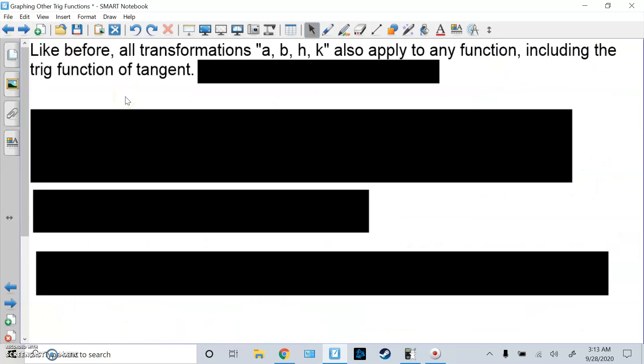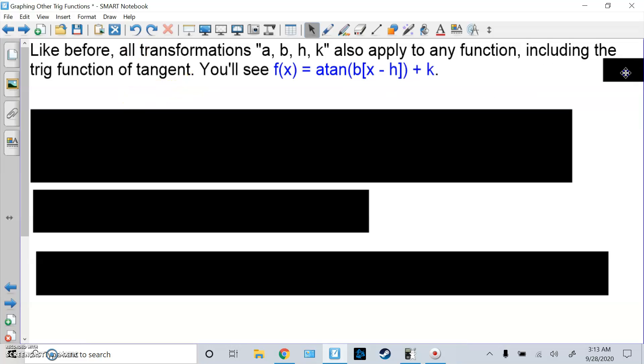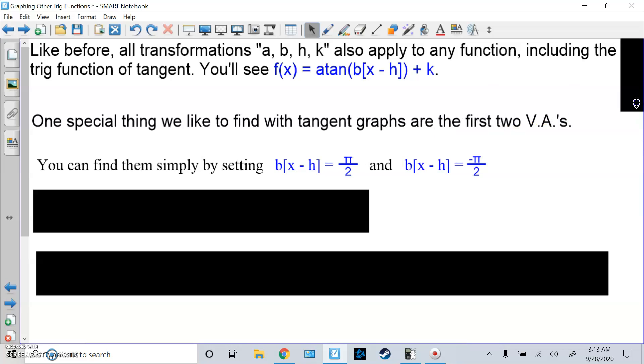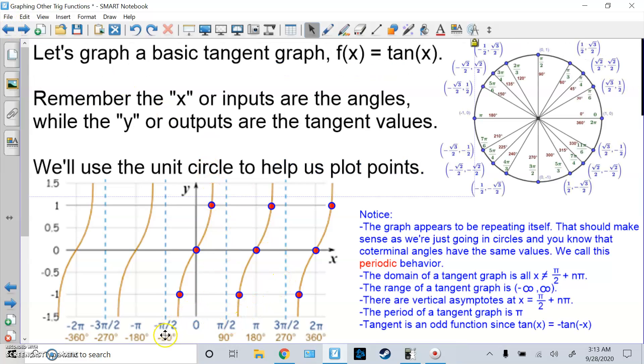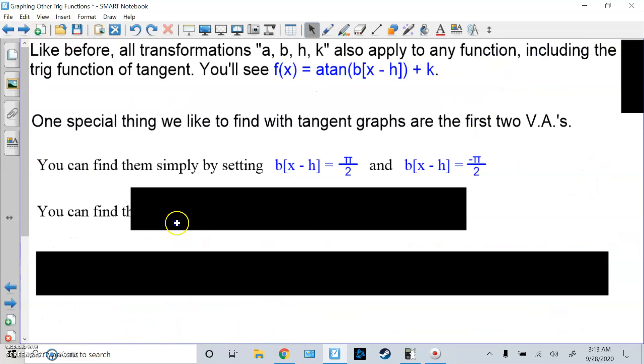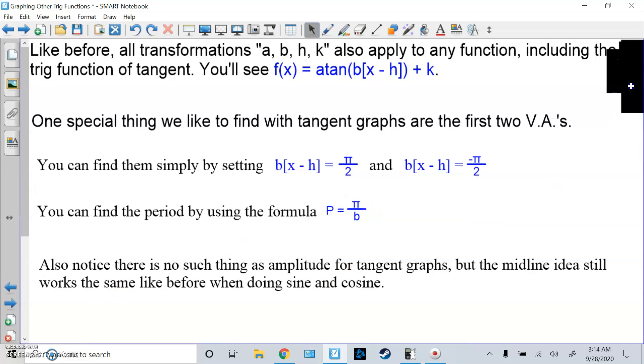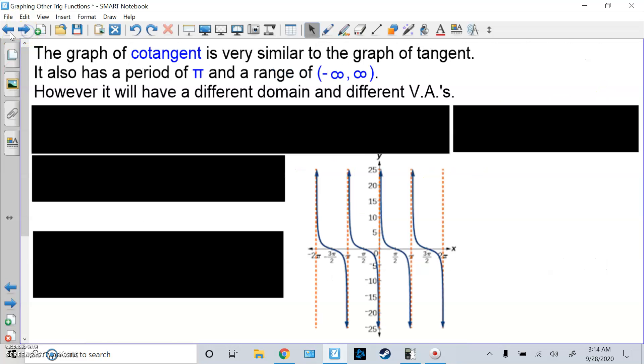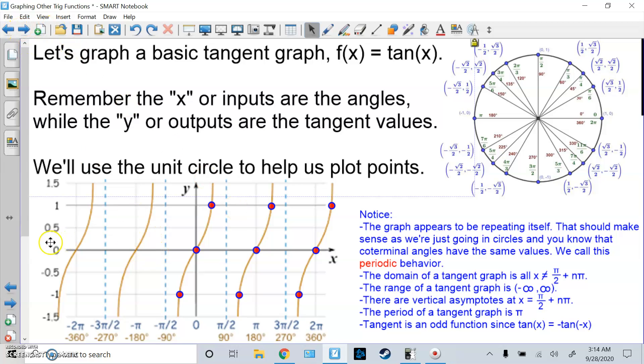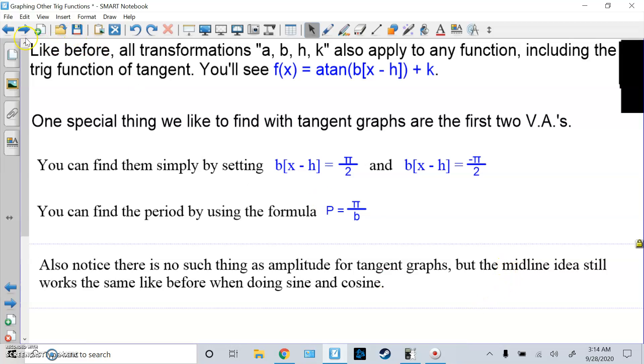So like before, all transformations a, b, h, k apply to any function, including the trig function of tangent. You'll see this equation: f(x) = a*tan(b(x - h)) + k. One special thing we like to find about tangent are those vertical asymptotes, the first two. You can find them by just solving this equation: b(x - h) = pi/2 and negative pi/2. That came from this pi over 2 asymptote here and this negative pi over 2 asymptote here, and you can do any two asymptotes you want. You can also find the period using our period formula: p equals the true period of our function over b. Now sine and cosine had 2 pi as the true period over b, but for tangent, its true period is pi, so all that changes is the top part. And also there's no such thing as amplitude. I mean there is a vertical stretch or compression, but it goes up forever so you can't talk about a height above or below the midline. But there still technically is kind of a middle, so the midline idea still applies.